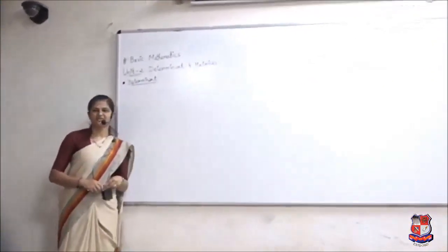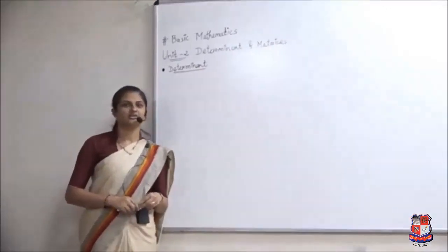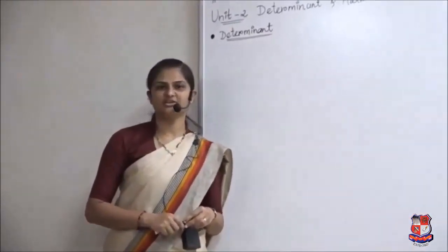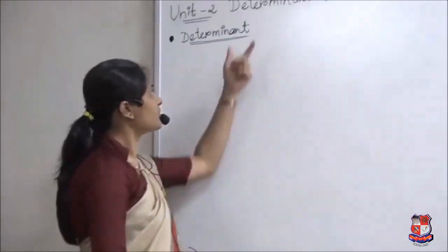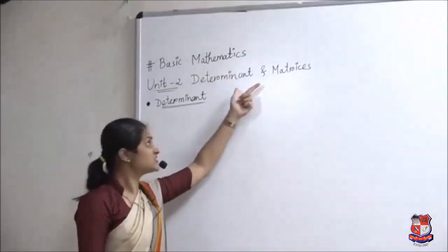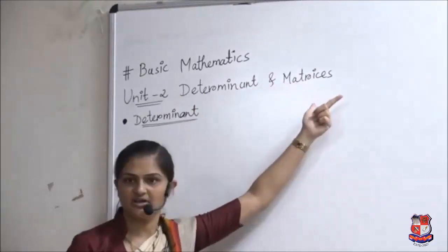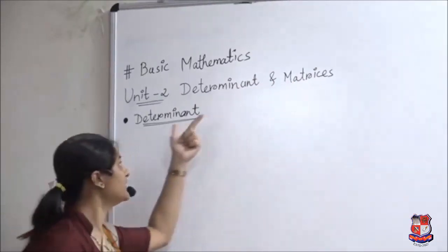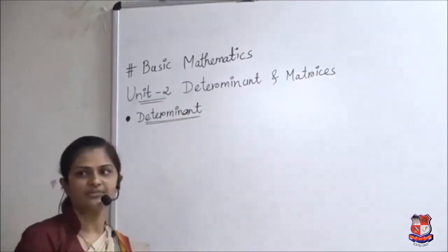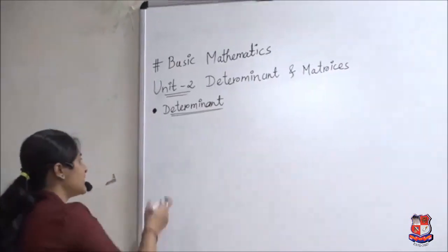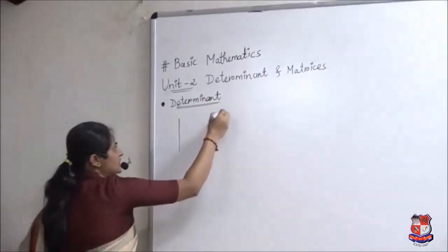Basic Mathematics Diploma Engineering, Unit Number 2: Determinant and Matrices. In this chapter, there are two parts - first part is determinant and the other part is matrices. Now let's look at the determinants. In the determinant, you have 2x2 and 3x3.